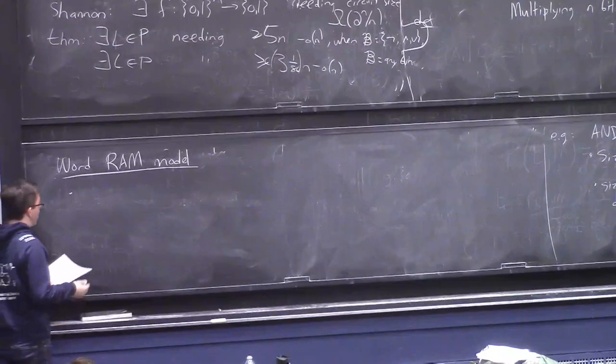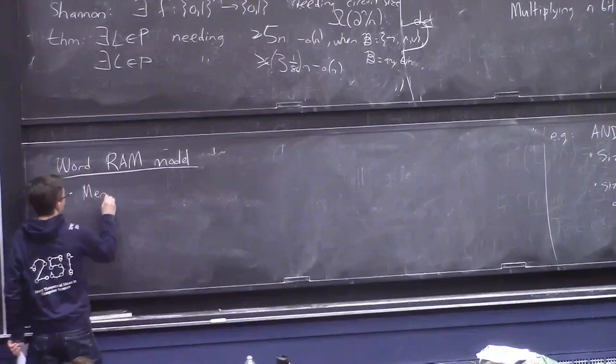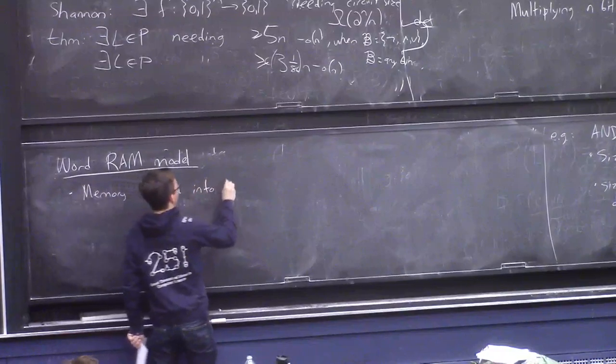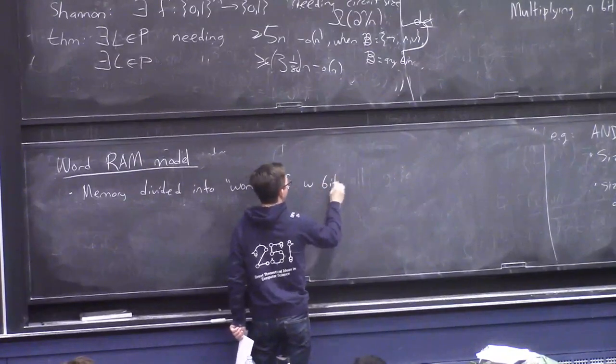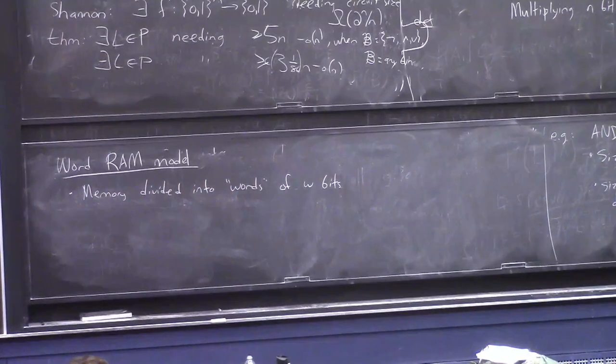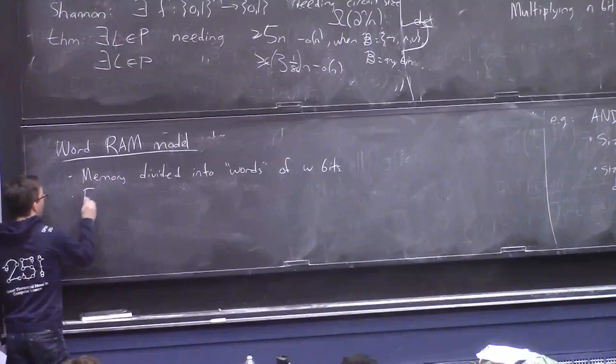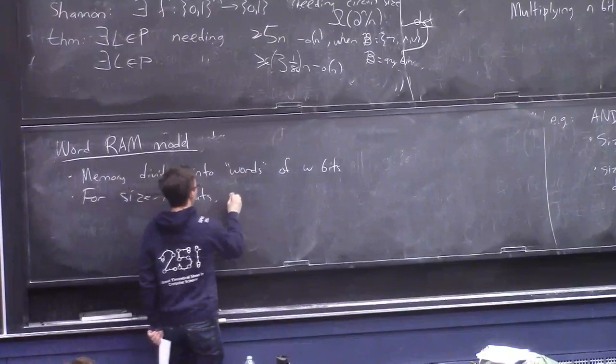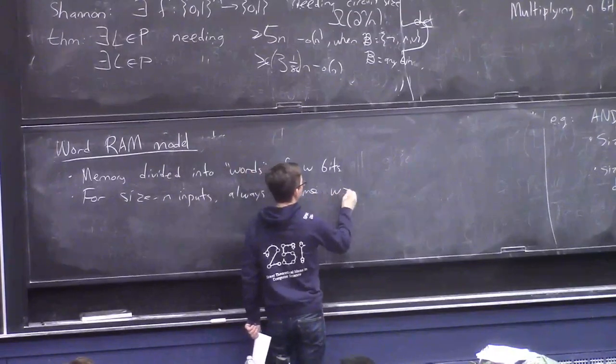But you can basically describe it in an understandable way. So here in the WordRAM model, memory is not just bits, but it's divided into words of W bits. So like on your classic x86 chip, think of W as 64. It operates on 64-bit chunks.